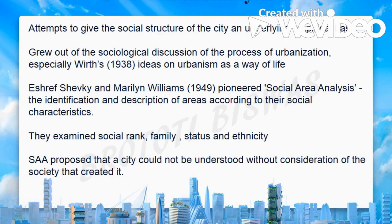Social area analysis grew out of discussions from 1938, but it was the work of Eshref Shevky and Marilyn Williams in 1949, titled 'Social Area Analysis,' which helped in the identification and description of areas according to their social characteristics. According to Shevky and Williams, urban land use could not be explained only in terms of residential characteristics as done in the morphological approach.